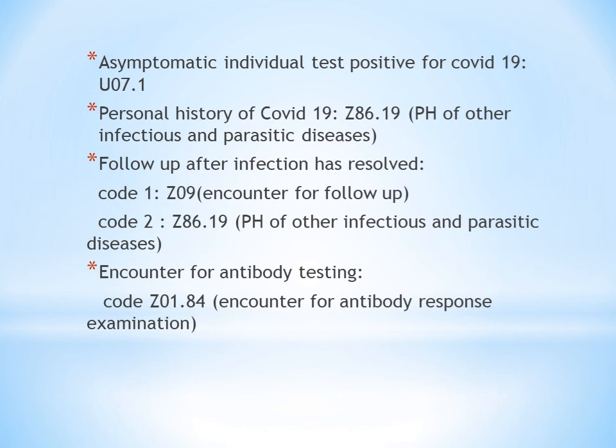The last topic is encounter for antibody testing. Antibody testing is used to detect the presence of antibodies if the patient was previously infected with COVID-19. If the patient currently comes for antibody testing, you code Z01.84: encounter for antibody response examination. These are the codes for COVID-19 and related conditions.